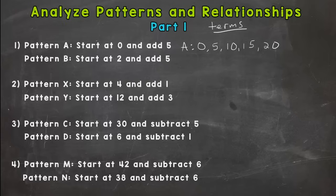So let's do B here. So pattern B, we start at 2, not 0. Don't start every pattern with 0. You have to pay attention to what you're doing and follow the direction. So it says start at 2. Add 5 each time. So 2, 7, 12, 17, and 22. Those are our terms for pattern B.